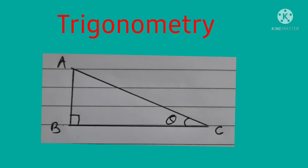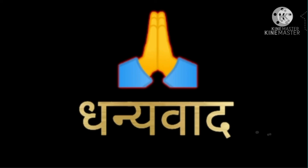So these are the six trigonometric ratios. This is sufficient information for the six trigonometric ratios. For next time, we will start a new chapter. Till then, we will stop here. Thank you.